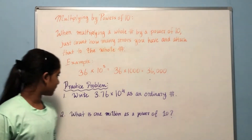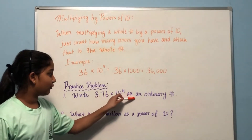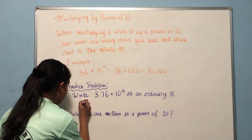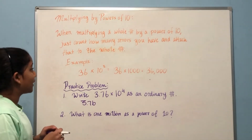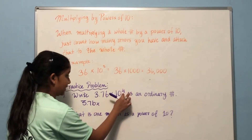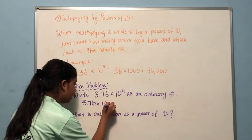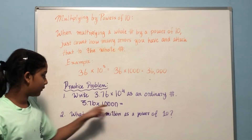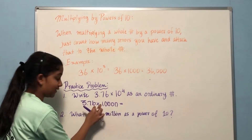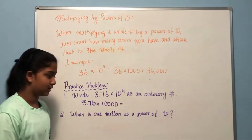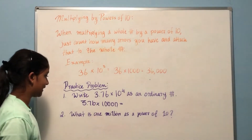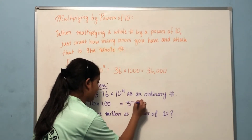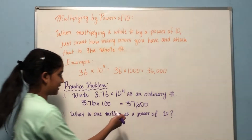Now let's do the practice problem: write three point seven six times ten to the power of four as an ordinary number. First we write down 3.76. We know we're going to have four zeros since the power is four. Since we have a decimal here, we first move the decimal two places to the right, making it a whole number — 3.76 times a hundred equals 376. Then we add the remaining two zeros, giving us thirty-seven thousand six hundred.